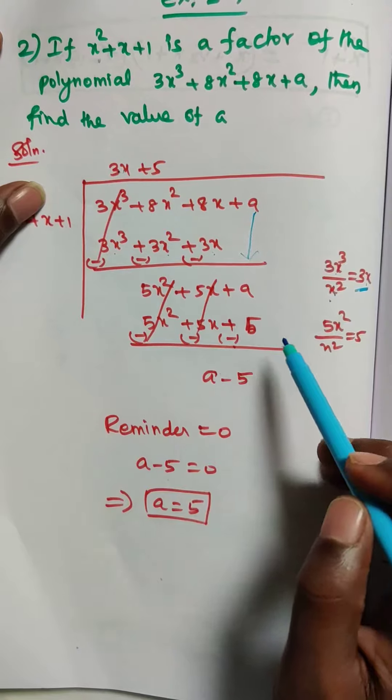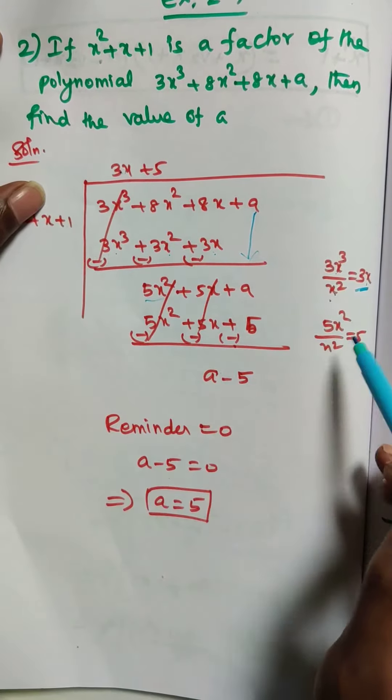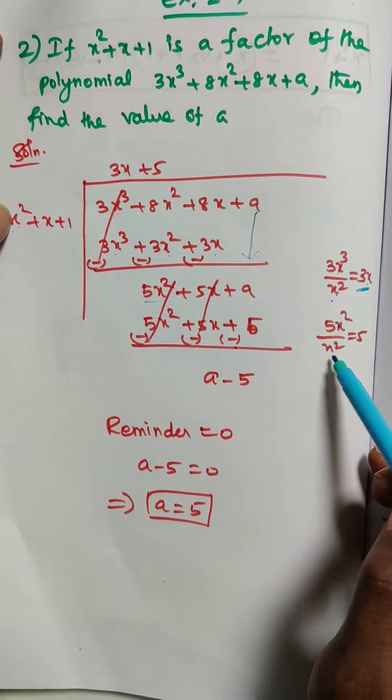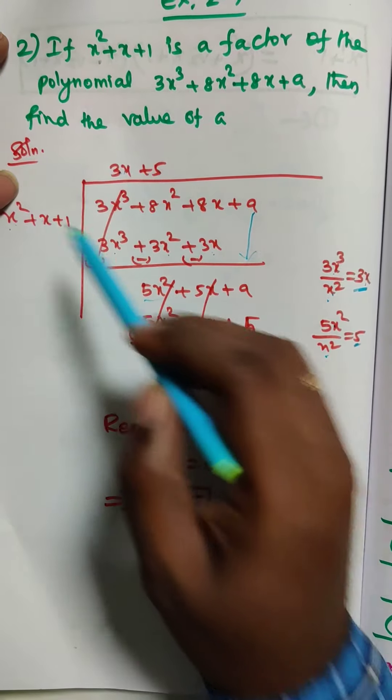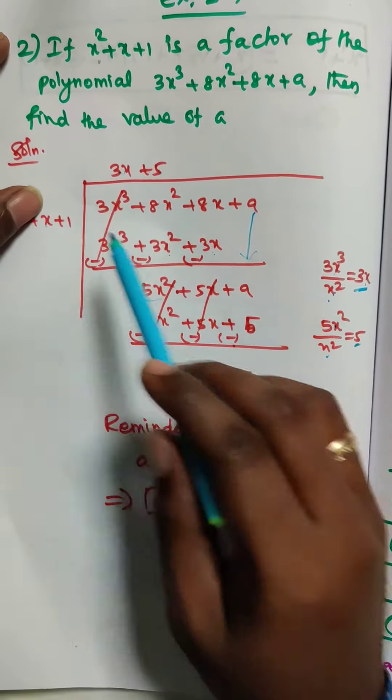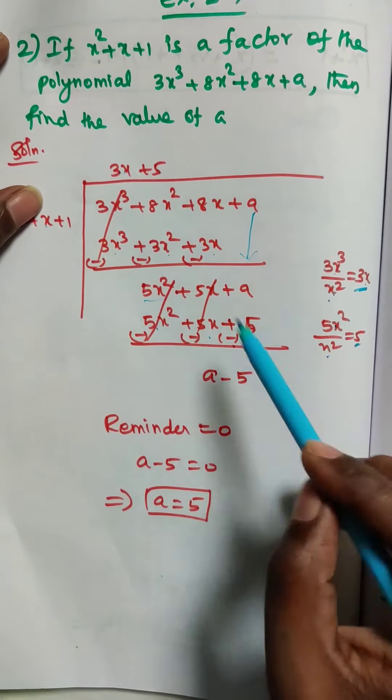So now the next term is 5x². 5x² divided by x² equals 5. 5 into x² is 5x², 5 into x is 5x, 5 into 1 is 5.